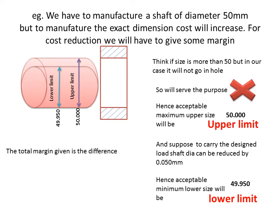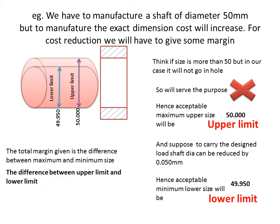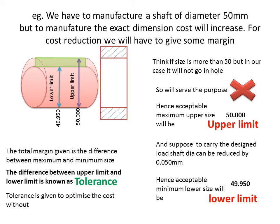The total margin given is the difference between maximum and minimum size. The difference between upper limit and lower limit is known as tolerance. This tolerance is indicated by the green zone. Tolerance is given to optimize the cost without affecting the purpose of the job.